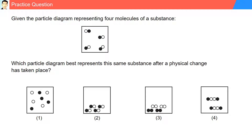Practice question: given the particle diagram representing four molecules of a substance, which particle diagram best represents the same substance after a physical change has taken place? A physical change does not change the composition of the substance — it will remain the same. The only difference is it might change its physical state. In the answer choices, choices one, three, and four all have changed composition, while in choice two the composition remained the same but it went from a gas state to a liquid state. Therefore, choice two is the same substance after a physical change has taken place.